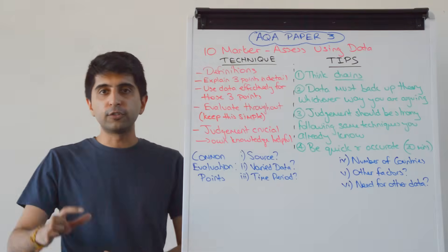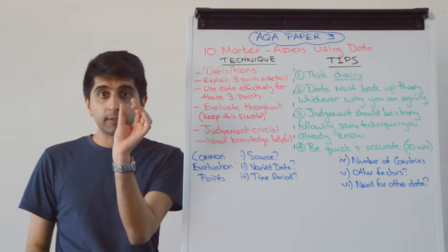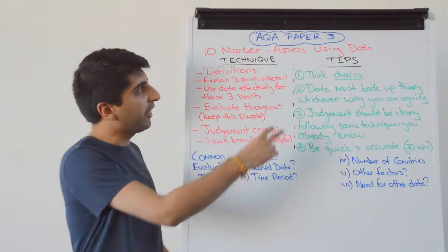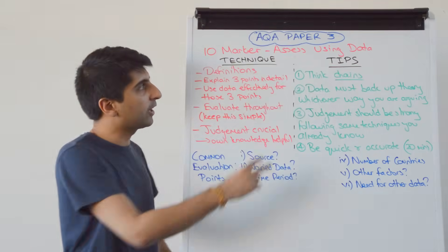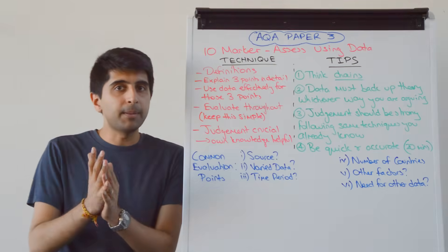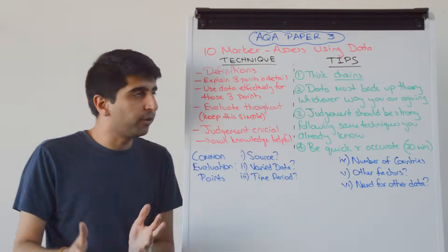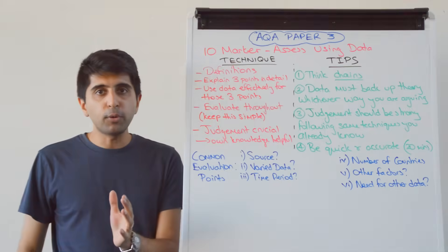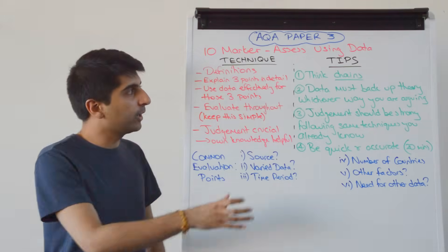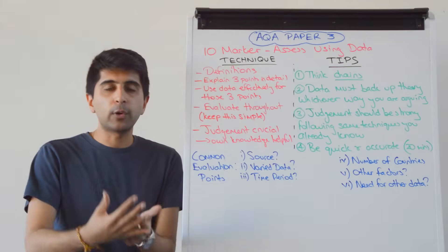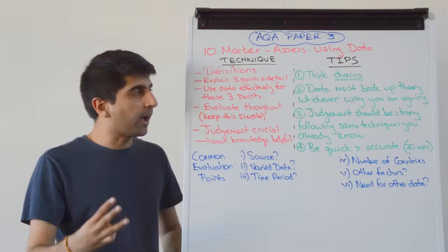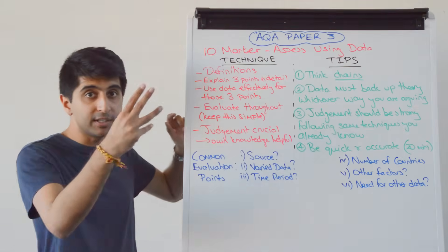Then what you're looking to do is to write three paragraphs — explain three points in detail. That could be about macro performance, about a core theory, or the impact of a policy. You're explaining three points in detail with theory, answering the question with economic theory three times — three different things.